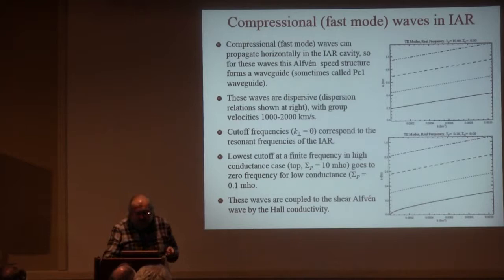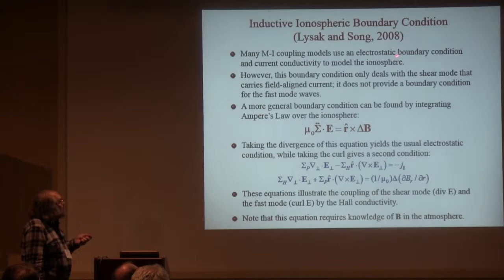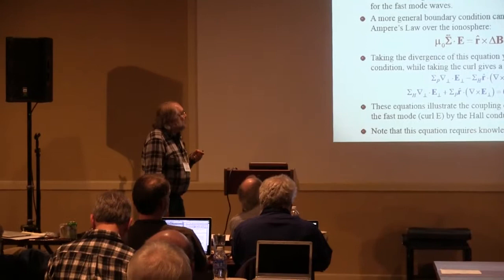I want to make one of my first provocative comments: many models we've seen today and yesterday have assumed an electrostatic boundary condition, which relies on current continuity to model the ionosphere. But if I want to model both the shear wave and the fast wave, this is not adequate, because the fast wave does not carry a field-aligned current — so it doesn't show up in that type of model.